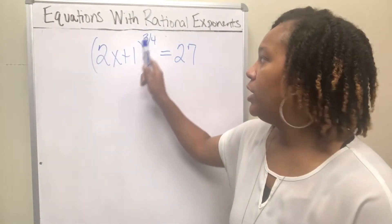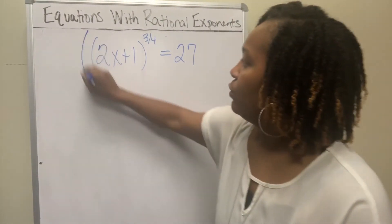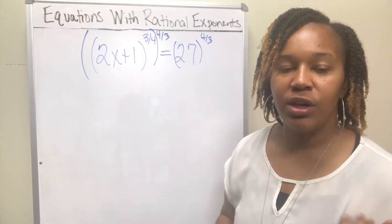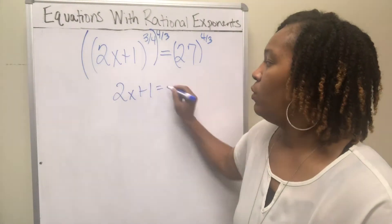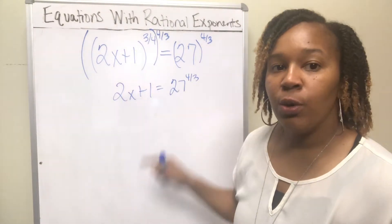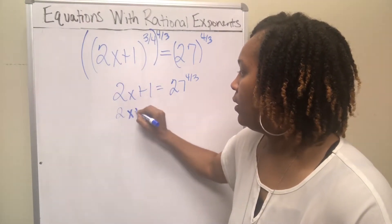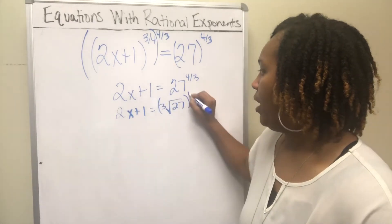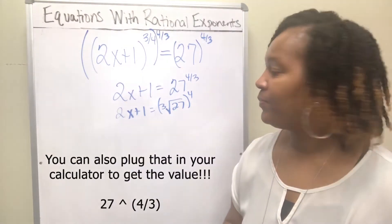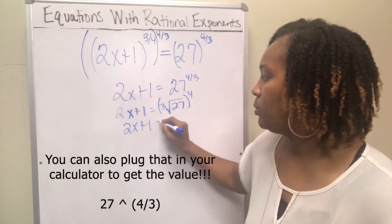The first thing you need to do is get rid of the exponent that's a fraction by raising both sides to the reciprocal power. The reciprocal of 3/4ths is 4/3rds. So 3/4ths times 4/3rds equals 1, and this becomes (2x plus 1) to the 1st — just write 2x plus 1 — and then you get 27 to the 4/3rds. Remember, the number in the denominator is the root, so that's the 3rd root of 27 raised to the 4th power. The 3rd root of 27 is 3, because 3 times 3 is 9, times another 3 is 27.